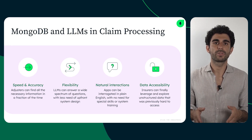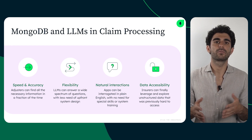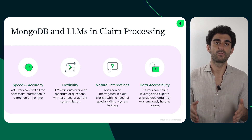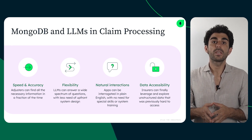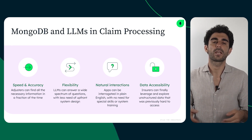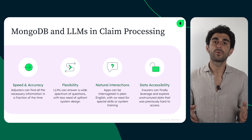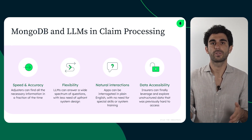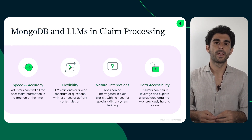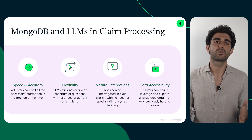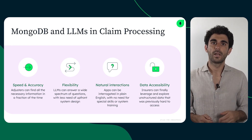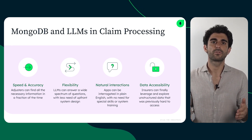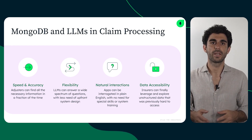The implementation of RAG represents a significant advancement for insurance companies, enabling them to assess damage more rapidly and accurately. This, in turn, translates into an enhanced customer experience. In summary, the fusion of MongoDB and LLMs is a game-changer for claim processing. Finding relevant information is fast and convenient, and LLMs are able to answer a wide range of questions, reducing the need for upfront planning and system design.